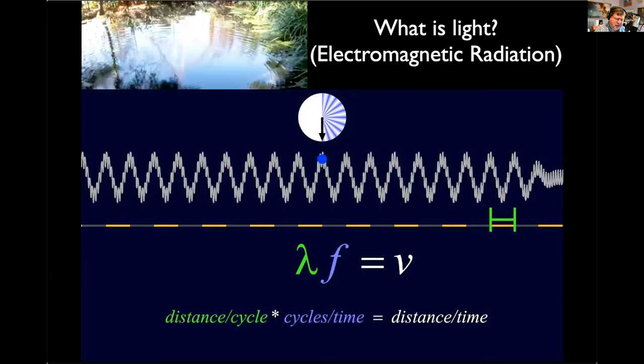Does light have harmonics? The answer is yes — very high frequency. It's not really how we usually talk about light; we usually talk about just the prime frequency. But the oscillations of light and the oscillations of sound are exactly the same. They're both sine waves with wavelengths, frequencies, and speeds.